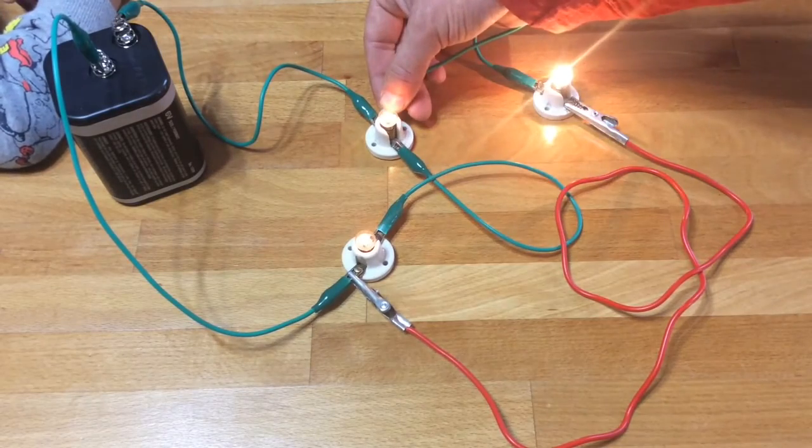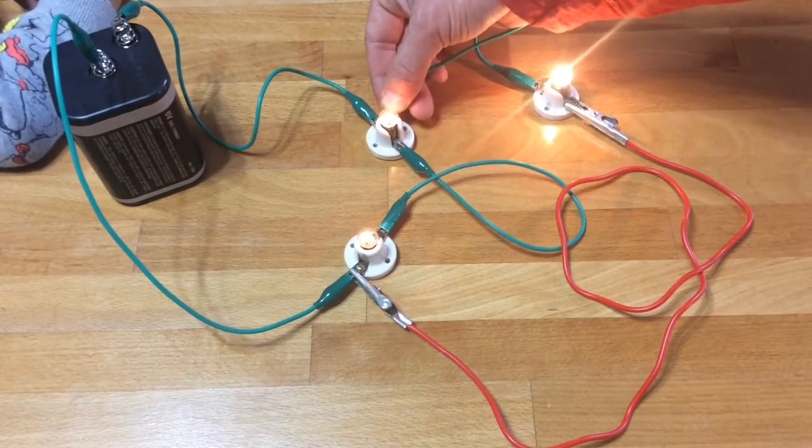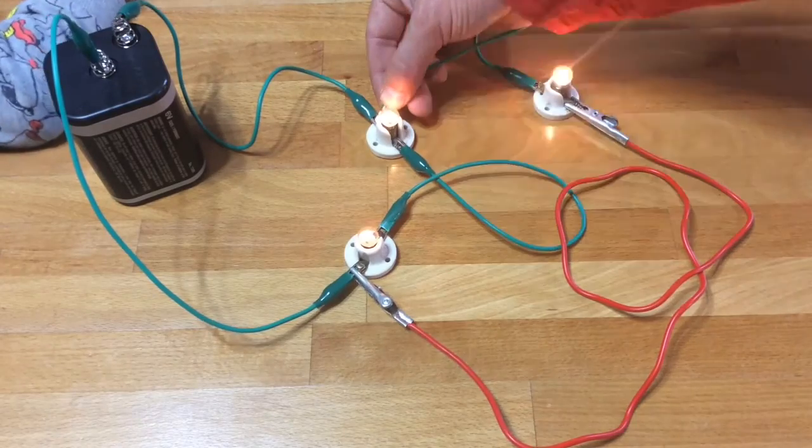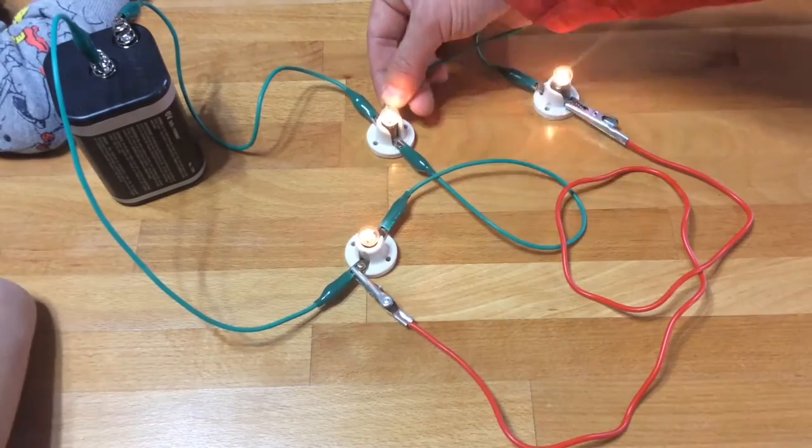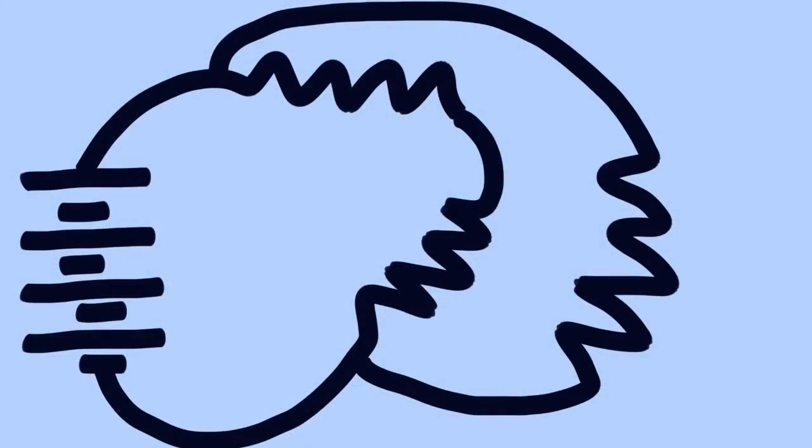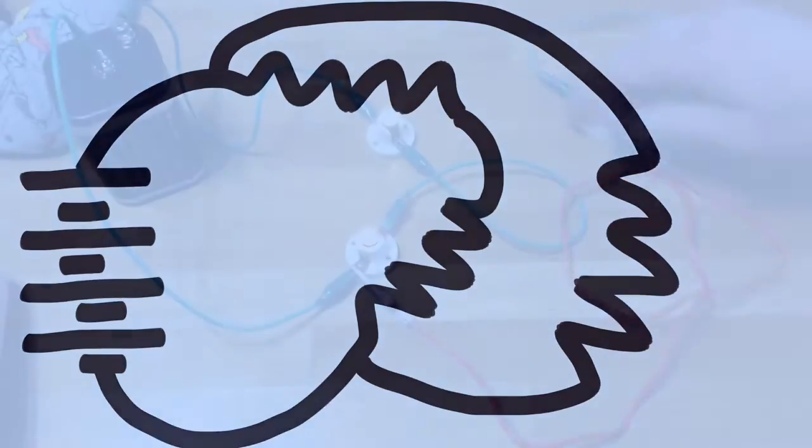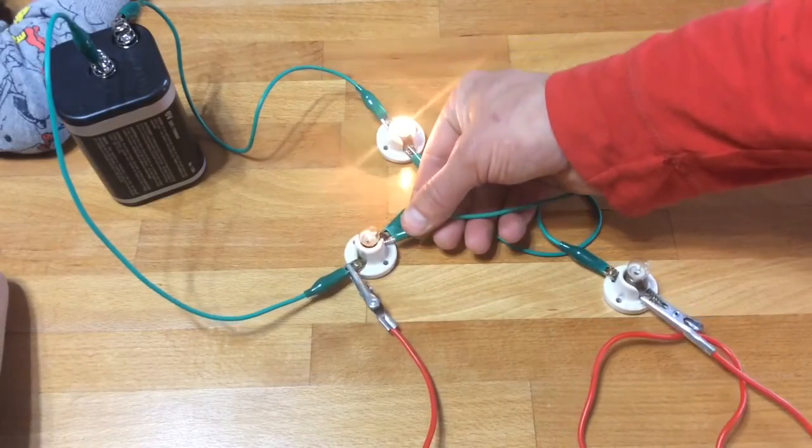There it is. Current tends to choose the path of less resistance, and so more current will flow through the single bulb branch because there's less resistance and it will brighten up because more current goes through there. More current does flow through the circuit overall also.